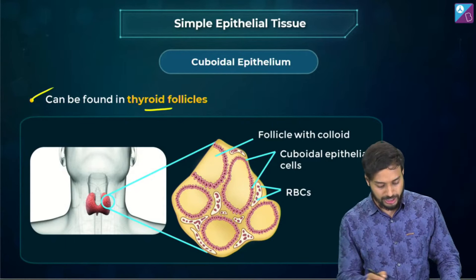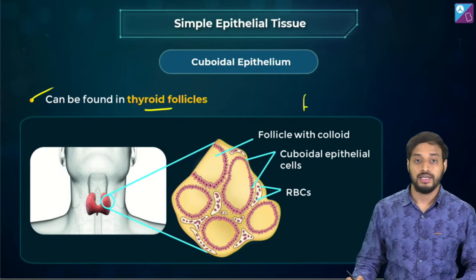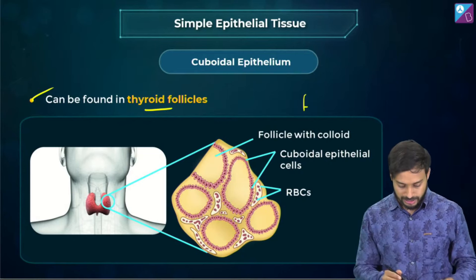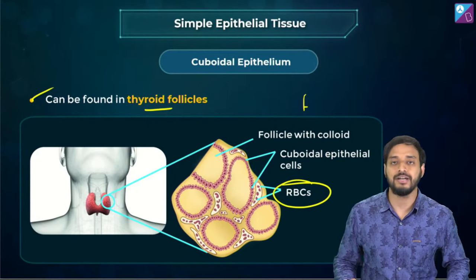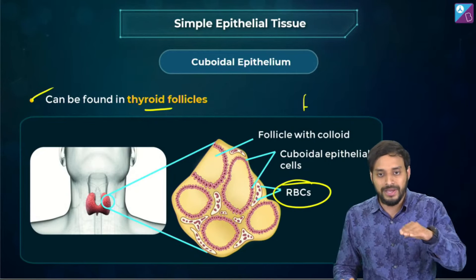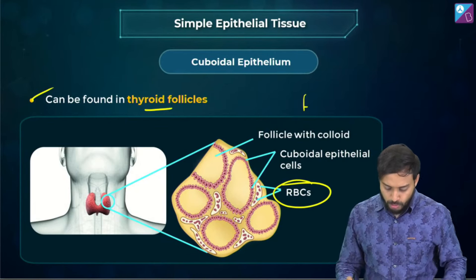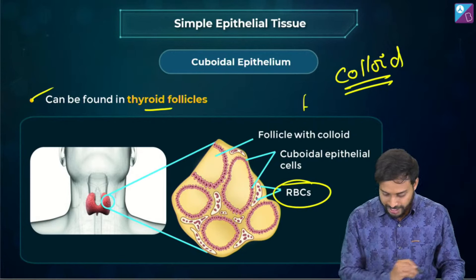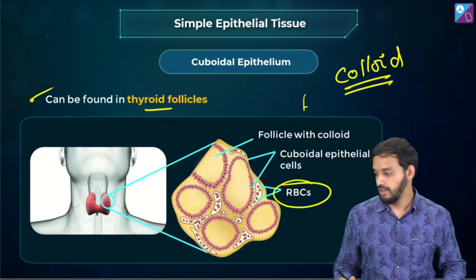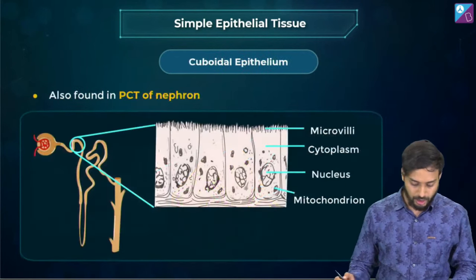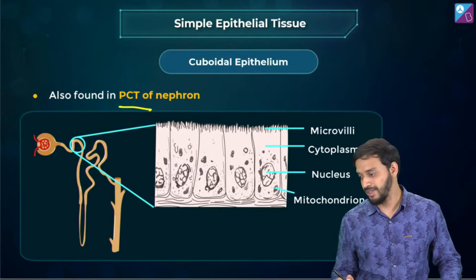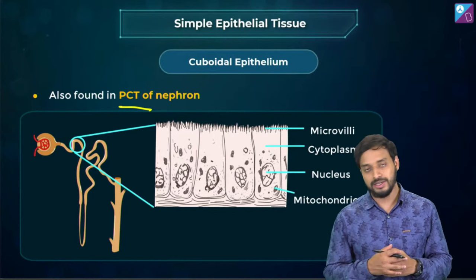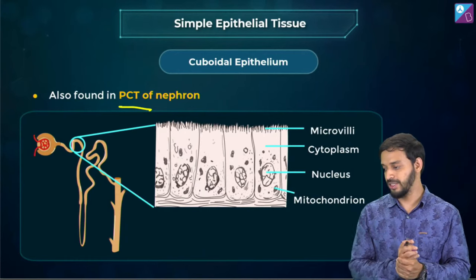Cuboidal epithelium is also found in thyroid follicles. The follicles are lined by cuboidal cells resting on the basement membrane. The cavity is filled with colloid material. It is also found in the PCT of the nephron as already discussed.